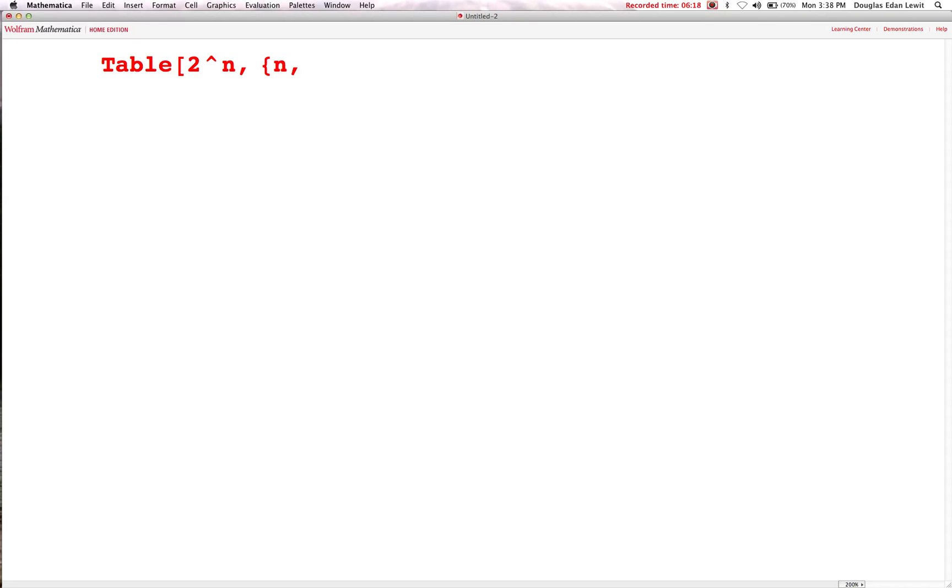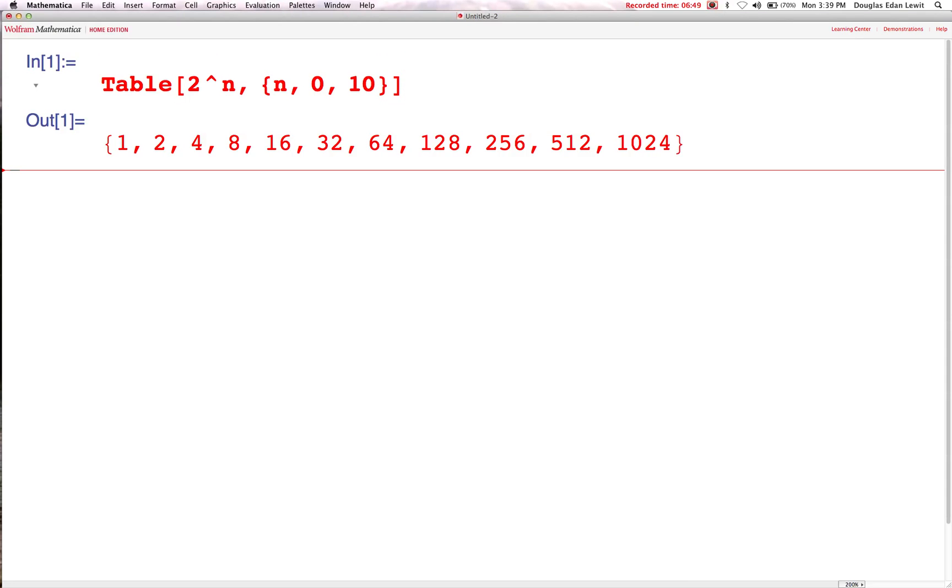Table 2 to the power n, where n goes from 0 to 10. And you're going to type this exactly as I'm typing it. You've got to follow the rules of the Mathematica language. Don't make up your own rules, because then the computer will not do what you expect of it. At the end of every Mathematica command, you're going to hold down the shift and enter keys. Press shift, hold it down, and then press enter.